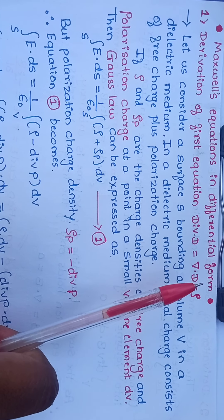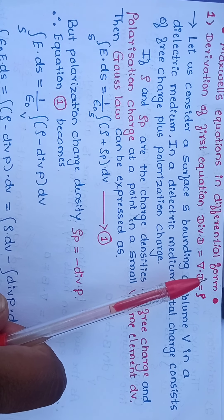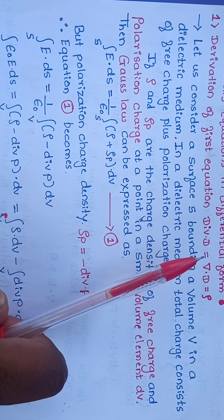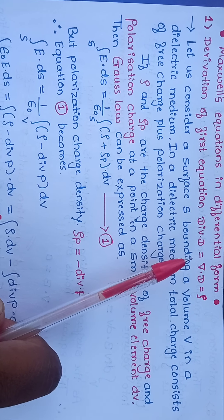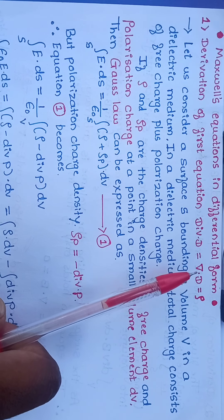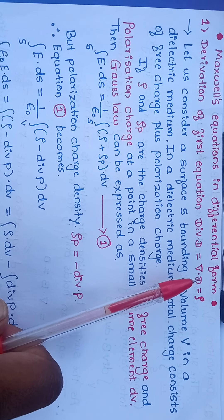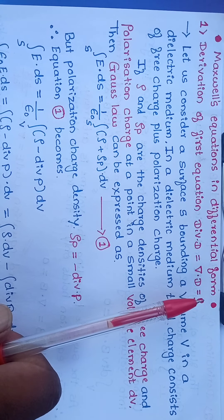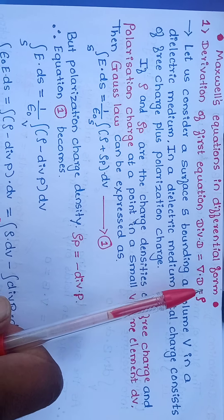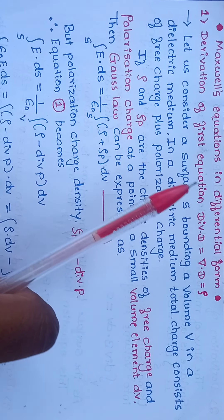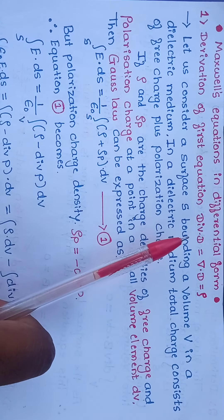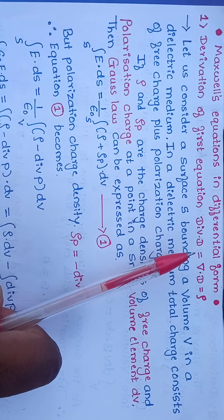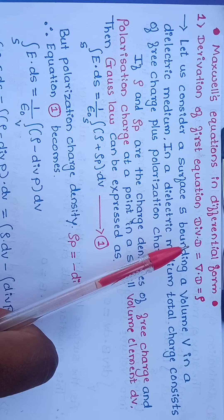The second one is del dot B equal to 0. The third one is del cross E equal to minus ∂B/∂t. And the fourth one is del cross H equal to J plus ∂D/∂t.